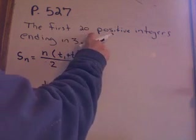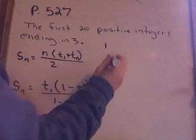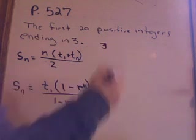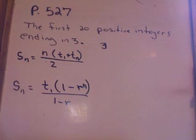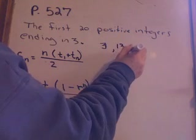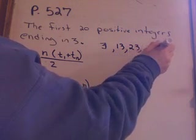So first of all, positive integers ending in 3. If I look at positive integers ending in 3, the first positive number ending in 3 is 3. The next one, 13. The next one, 23.